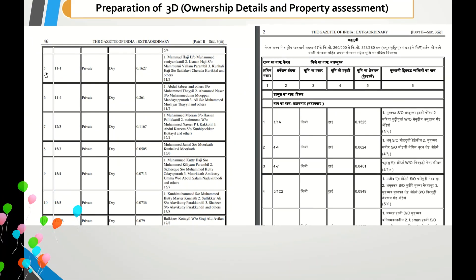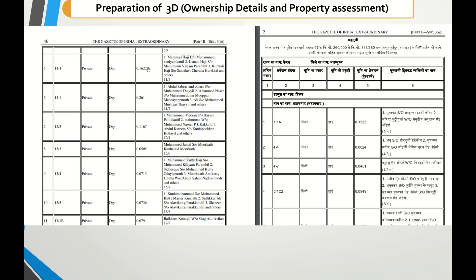For Schedule 3D - that is three capital D - whatever we mentioned in Schedule 3A regarding type of land, survey number, and area, here we additionally need to mention ownership details. You can see: survey number, type of land, nature - dry or wet - and area to be acquired from Schedule 3A. After that, ownership details need to be mentioned. This should be prepared in both local language and English, as it will be published in the newspaper. The only difference in Schedule 3D format is the addition of ownership details.